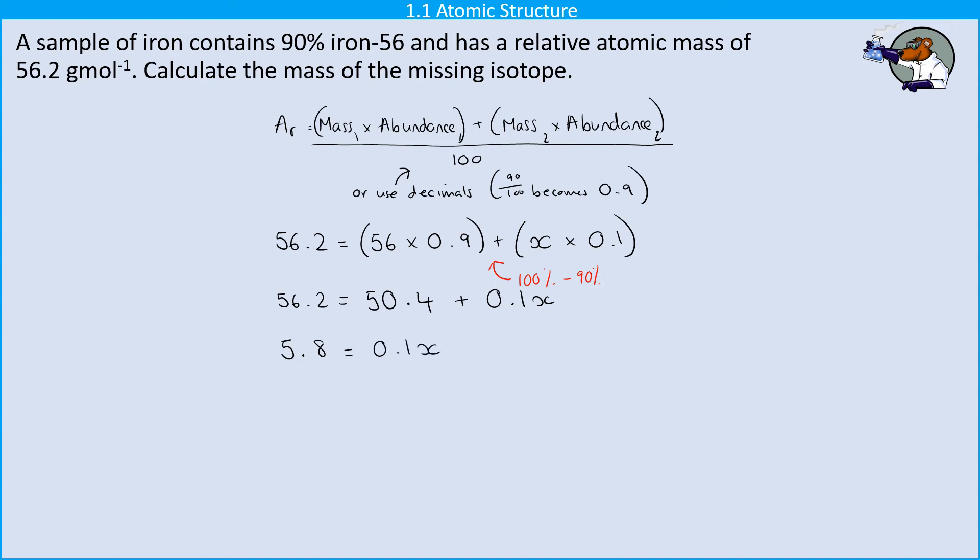If I divide both sides of that equation by 0.1 to get rid of that 0.1 I'm left with 58 is x so at this point I'm done but what I would also do at this point is a bit of a common sense check.